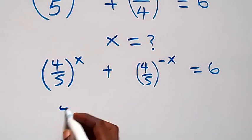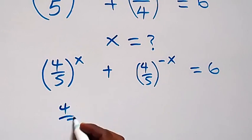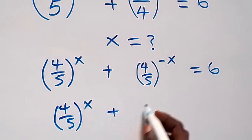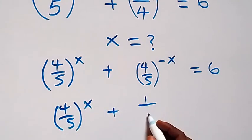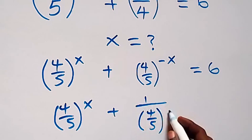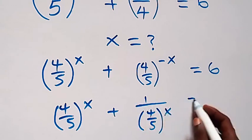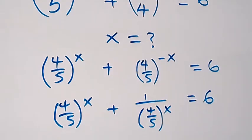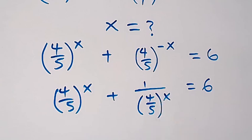Here we can write it as 4 over 5 raised to power x, then plus 1 over 4 over 5 raised to power x, equals to 6. Because 1 raised to power x is still 1.